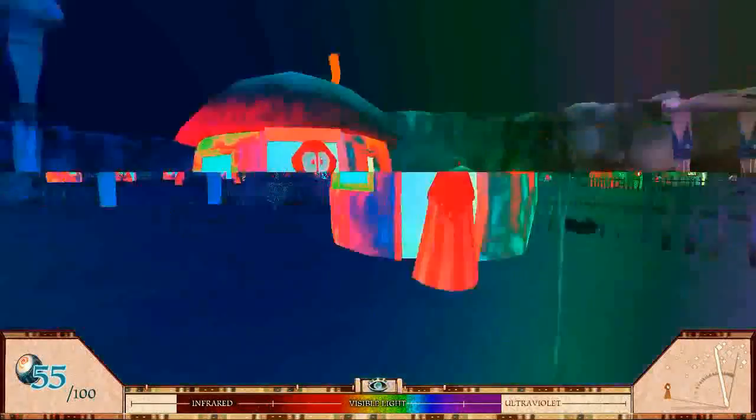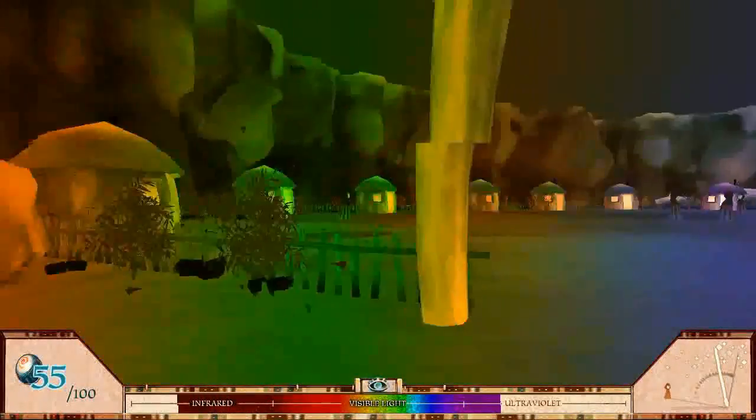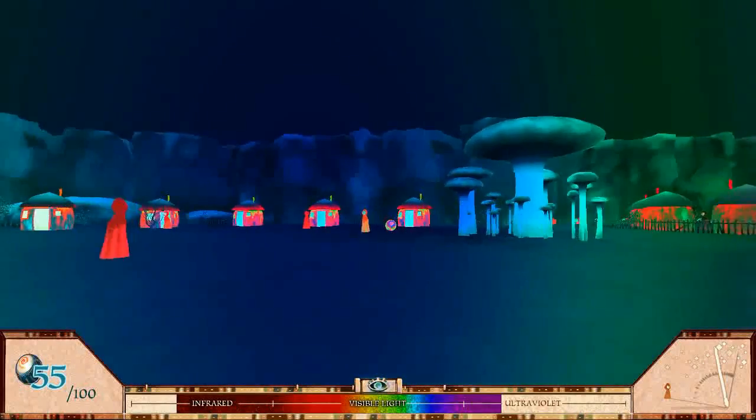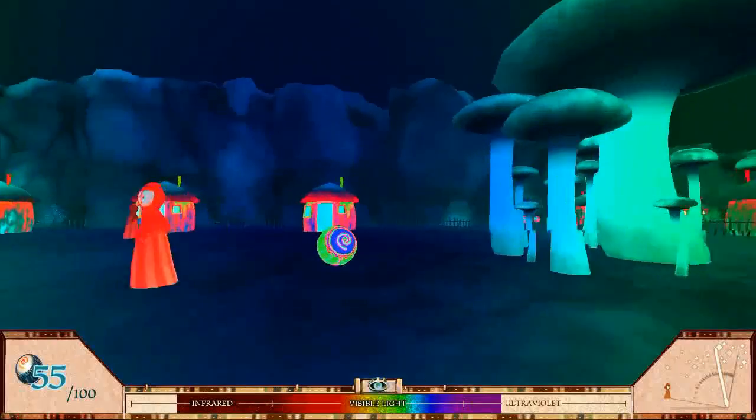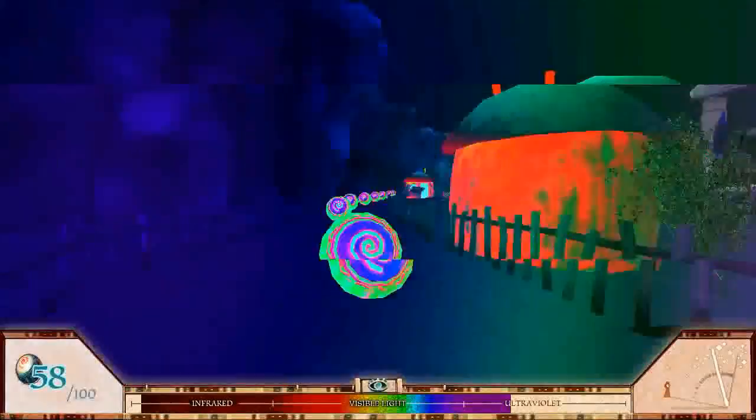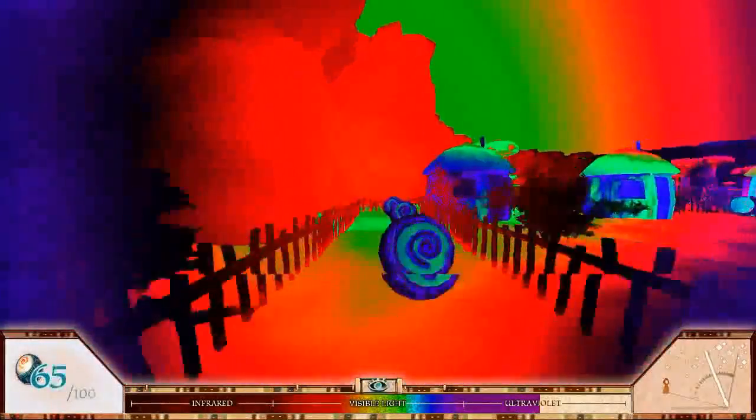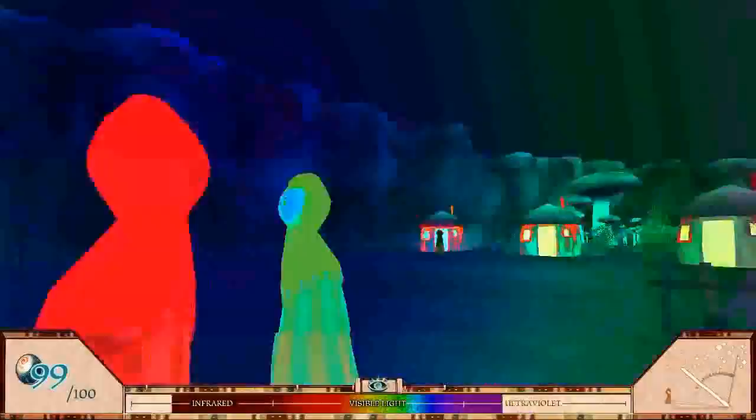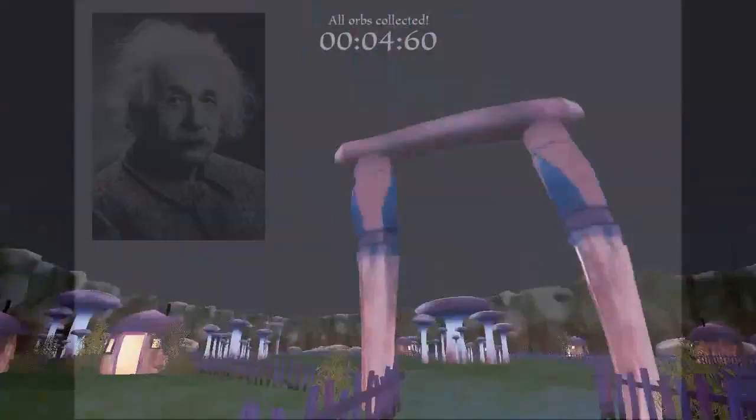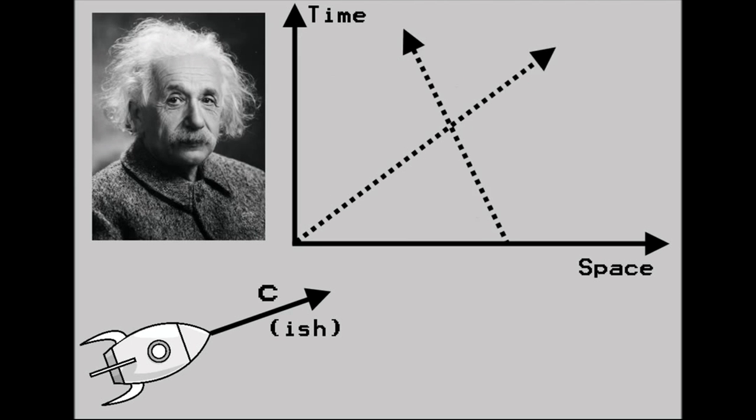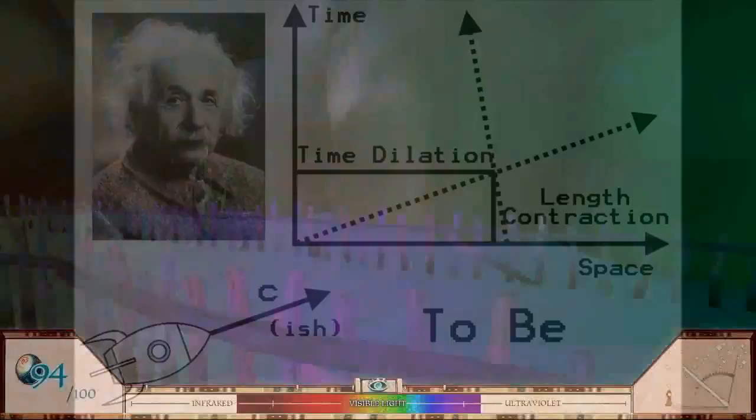The only way this is possible is if space and time are perceived differently by observers inside and outside the train. For both to be possible, the user has to contract in the direction it's moving, and time must go slower relative to an outside observer. At C, the length would be zero and time would stop and their mass would be infinite. At C, a journey from point A to point B would take place in an instant. From the perspective of light, it would take no time to get from Earth to Andromeda. At C, time and space become arbitrary and everything is simultaneous for it.